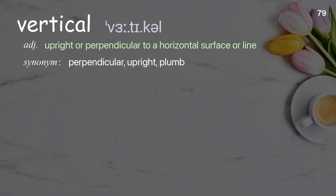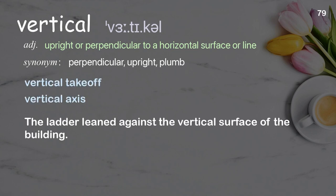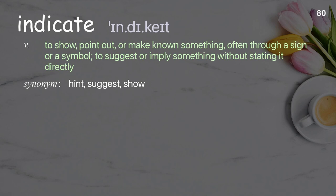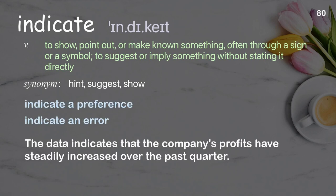Vertical: Upright or perpendicular to a horizontal surface or line. Examples: Vertical takeoff. A vertical axis. The ladder leaned against the vertical surface of the building. Indicate: to suggest or imply something without stating it directly. Examples: Indicate a preference. Indicate an error. The data indicates that the company's profits have steadily increased over the past quarter.